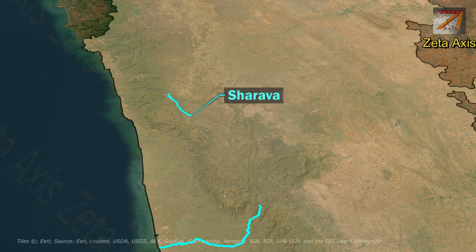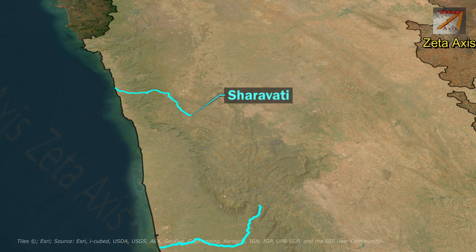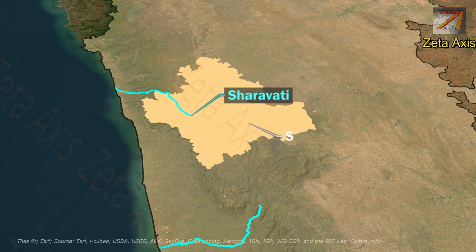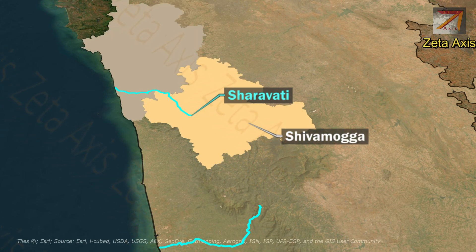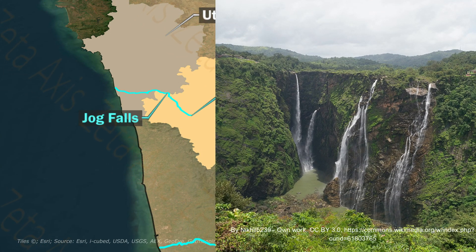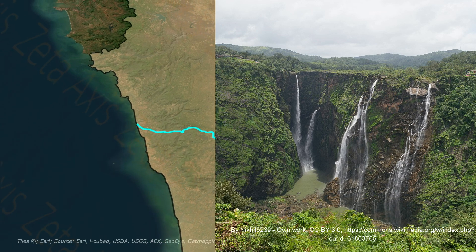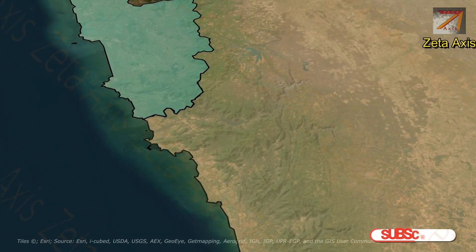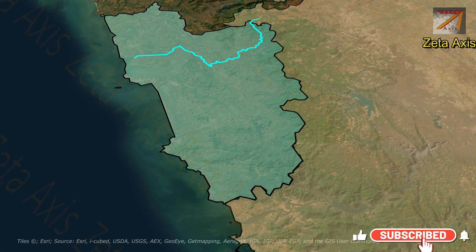Another westward-flowing river of Karnataka is the Sharavati river, which originates and flows entirely within the state of Karnataka. It originates in Shimoga district and flows into the Arabian Sea in Uttar Kannada district. The famous Jog Falls is located on the banks of the Sharavati river.